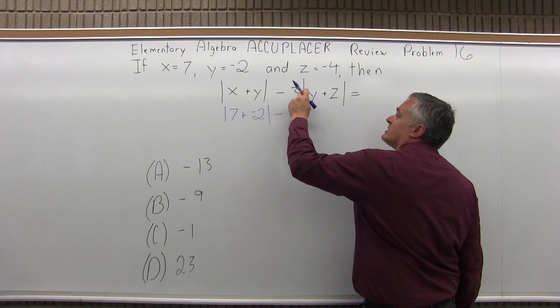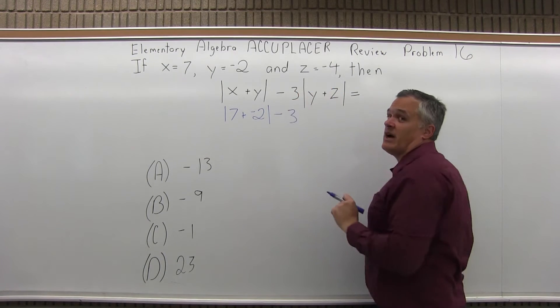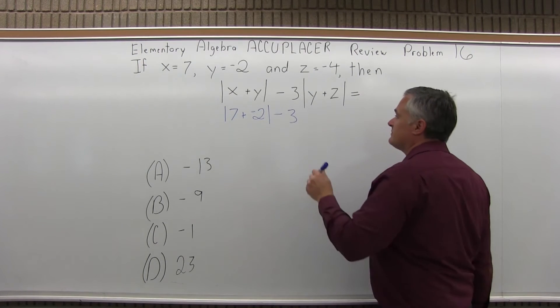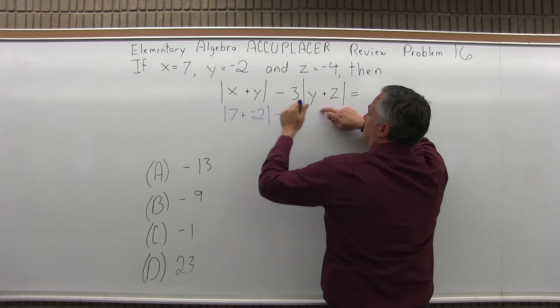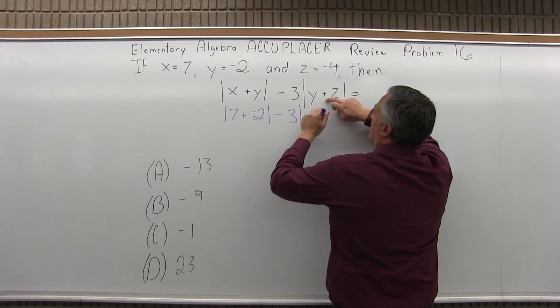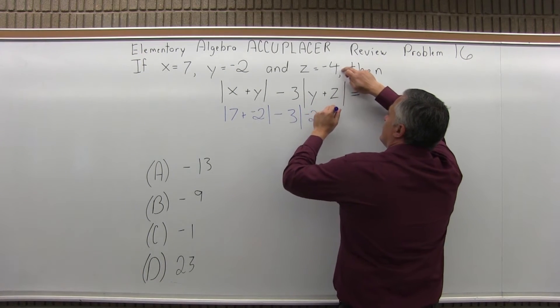Notice there's no operation symbol between the 3 and the absolute value. It's implied that it's multiplied. So it's 3 times the absolute value of y, y is negative 2, plus z. z is negative 4.